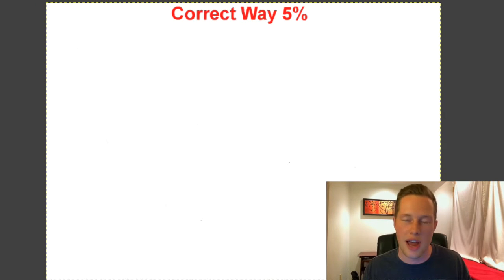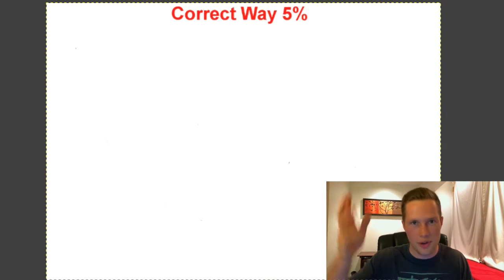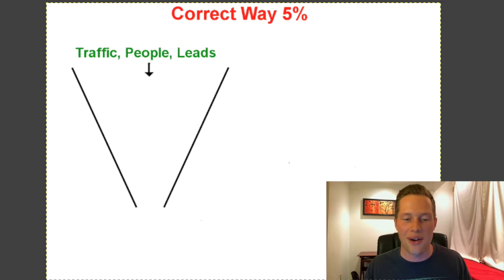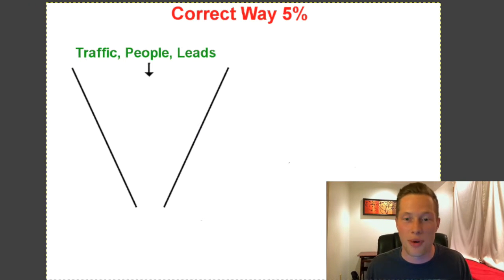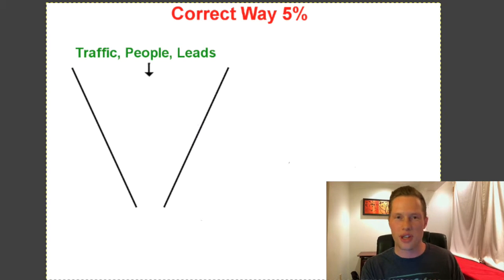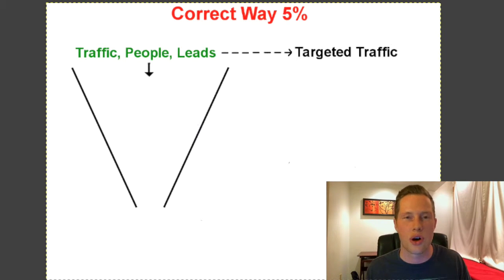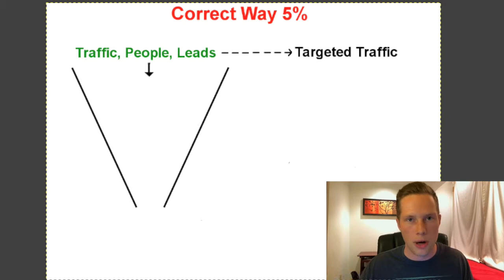I'm just going to draw this out another way to give you a different visual representation. Here's what it's called — it's called the sales funnel. Here's the same thing: traffic, leads, and people. But as opposed to just random people you're approaching on social media, you're going to be attracting people who are interested in what you have to offer. This is called targeted traffic — your target market.